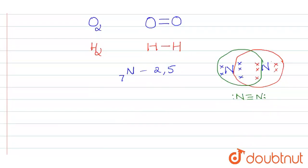So if you go with the oxygen, oxygen has atomic number 8, which is 2, 6. So each oxygen has 6 electrons: 1, 2, 3, 4, 5, 6.